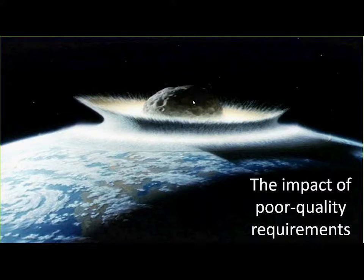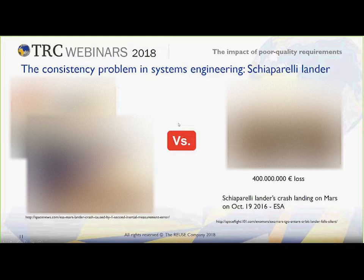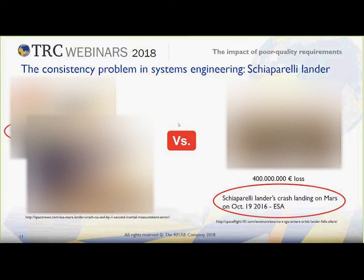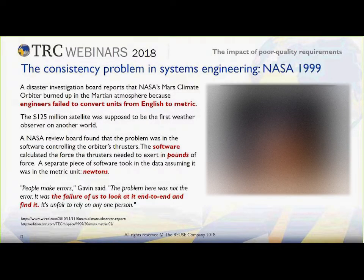Thank you, Elena. Welcome everybody to this webinar. I'll start by introducing what is the impact of poor quality requirements. Let me start with this impacting picture. Fortunately, this is just fiction. However, in the real world, sometimes we find that this is not fiction and this is real — like in the Schiaparelli lander planned to be landing on Mars and eventually crashing on Mars, and many other projects. We have many different cases of bad outcomes in our projects in Mars and other missions as well.